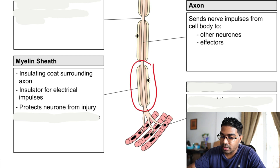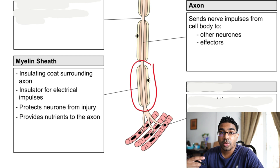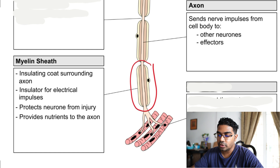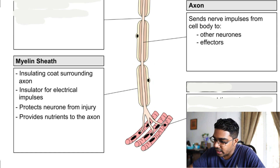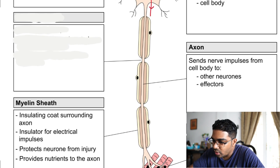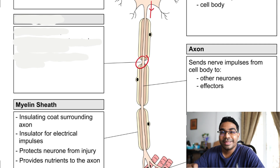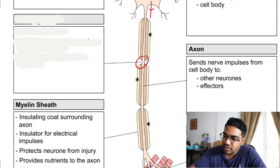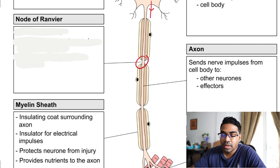The myelin sheath also acts as a protective coat, protecting the neuron from injury, and it also provides nutrients to the axon. In between each myelin sheath, there is a small gap. This gap is known as the node of Ranvier.